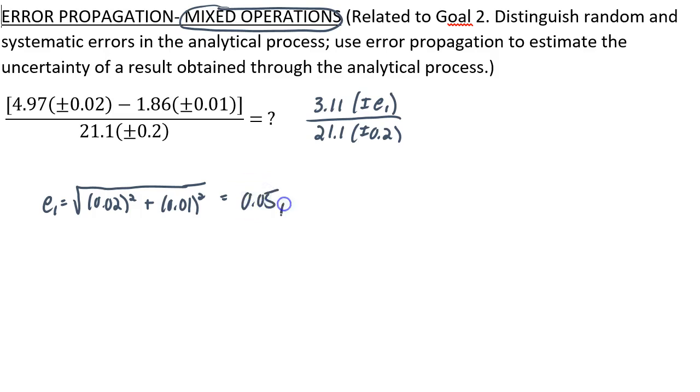So now the problem becomes 3.11 plus or minus 0.05 with an insignificant 1, divided by 21.1 plus or minus 0.2. And when I do this arithmetic here, I get 0.147 with an insignificant 4, plus or minus some error, which I'll call E2.